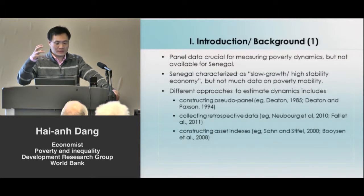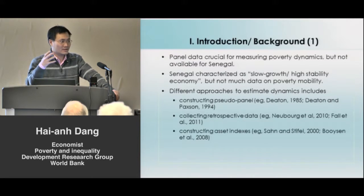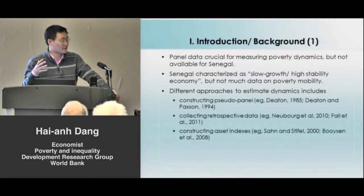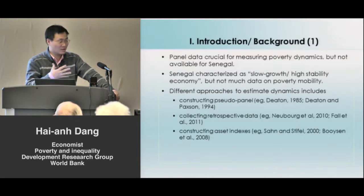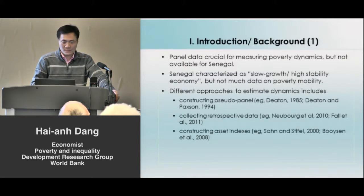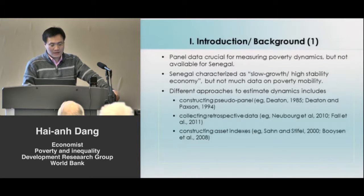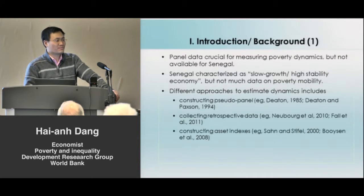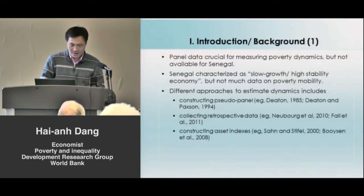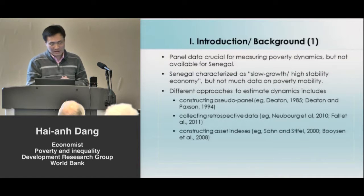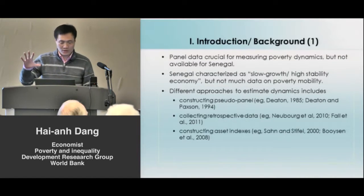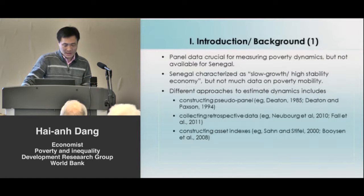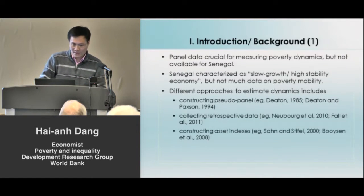By recall bias, I mean that households may not remember exactly what their spending or consumption levels were, say, three or five years ago. That can give us biased results. Another approach is to construct asset indexes over time, but that approach is more relevant to looking at cross-sectional poverty rather than true poverty dynamics.